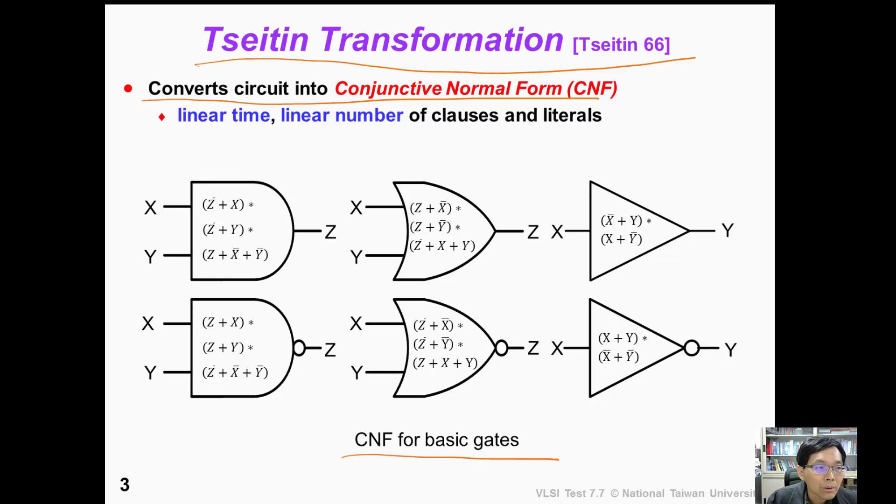For example, for this AND gate, if output Z is 1, then Z bar is 0. To satisfy this clause, then X must be 1. Similarly, if Z is 1, then the second clause would require Y to be 1.